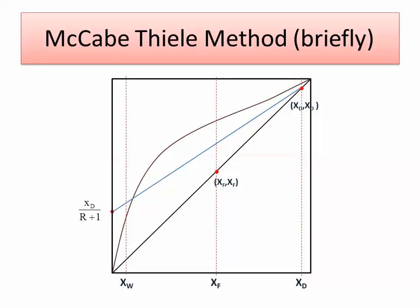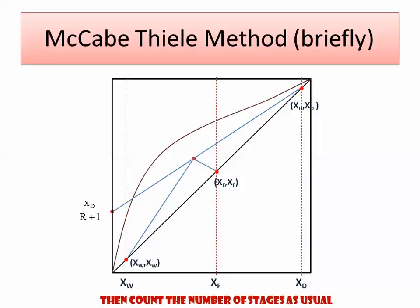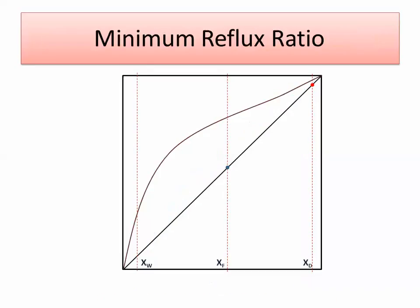There is a q-line which starts with the feed composition and depends on the phase the feed is in. You draw the line using the slope. Then you get the intersection of the top and bottom sections, and use it to draw the bottom section line by connecting this intersection point to the (xw, xw) point, and then you can draw the stages.